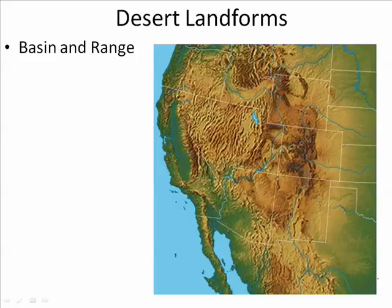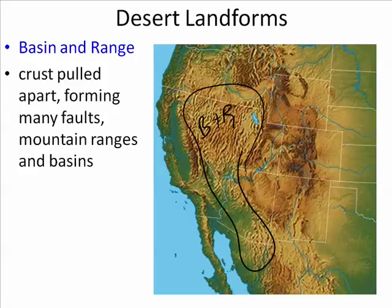Desert landforms in the United States occur in two distinctly different areas. One of them is Basin and Range, which is created because the crust is pulling apart. As it pulls apart, many faults form, and those faults cause down-dropped basins with mountain ranges in between.